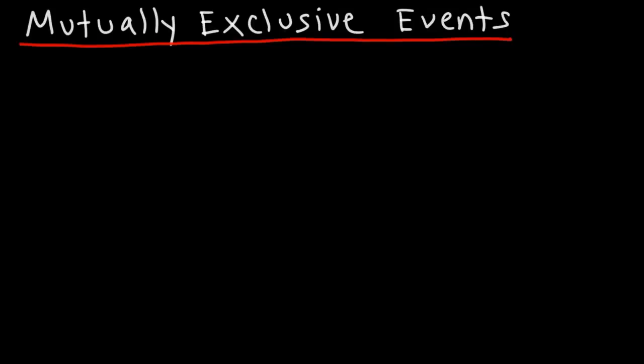In this lesson, we're going to focus on mutually exclusive events. What is a mutually exclusive event? These are events that cannot occur at the same time. If we have two events, event A and event B, events A and B will not occur at the same time if they do not share any outcomes.